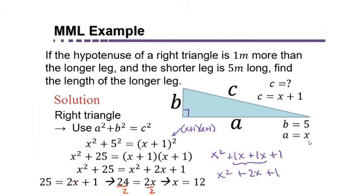So we found x, which was side a, and that was the longer leg. That was the side that they asked us to look for. And we need to use the meters, so the answer would be 12 meters.